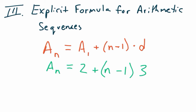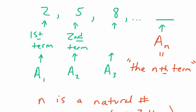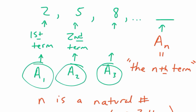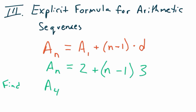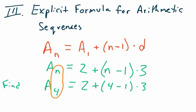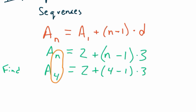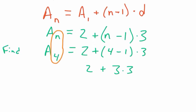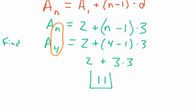So let's say the question says: find the fourth term. The fourth term is A sub 4, so N equals 4. On the right side we have 2 plus (4 minus 1) times 3. We do 4 minus 1 first to get 3, then 3 times 3 is 9, and 9 plus 2 is 11. So the fourth term in the list is 11.